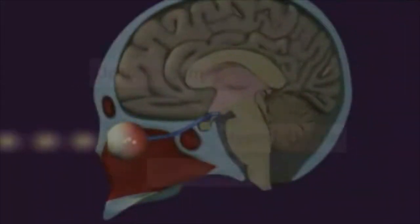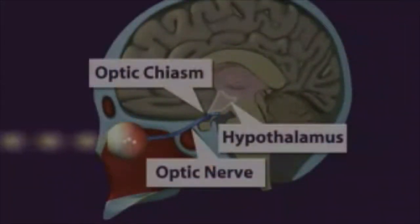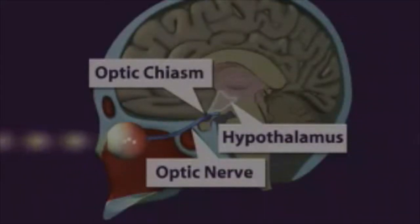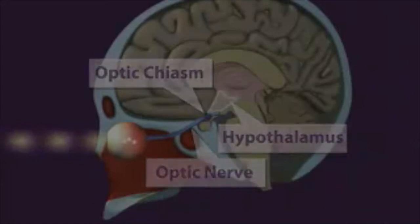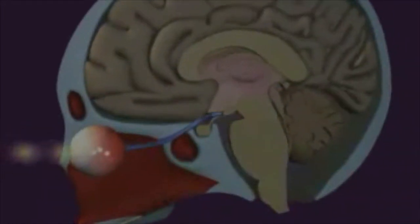This message is transmitted from the hypothalamus down the spinal cord to clusters of sympathetic nerve cell bodies, and then climbs back up to the pineal gland. When this message reaches the pineal gland, melatonin production is turned off.